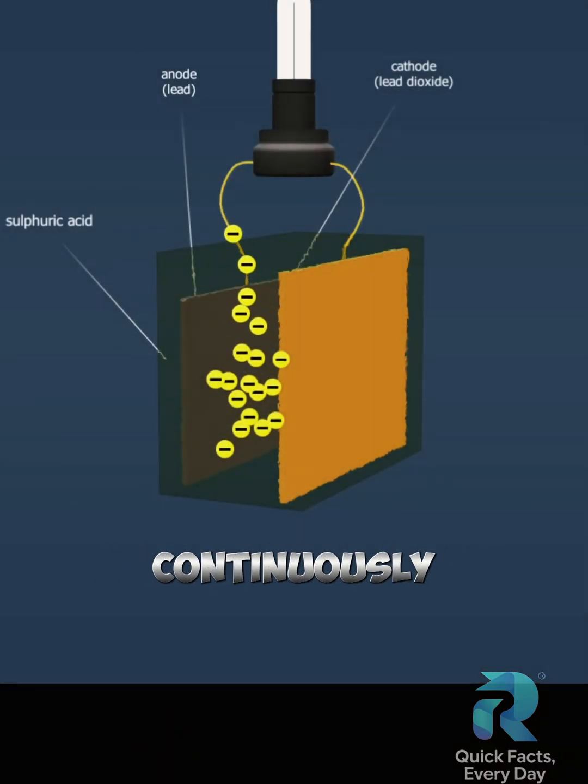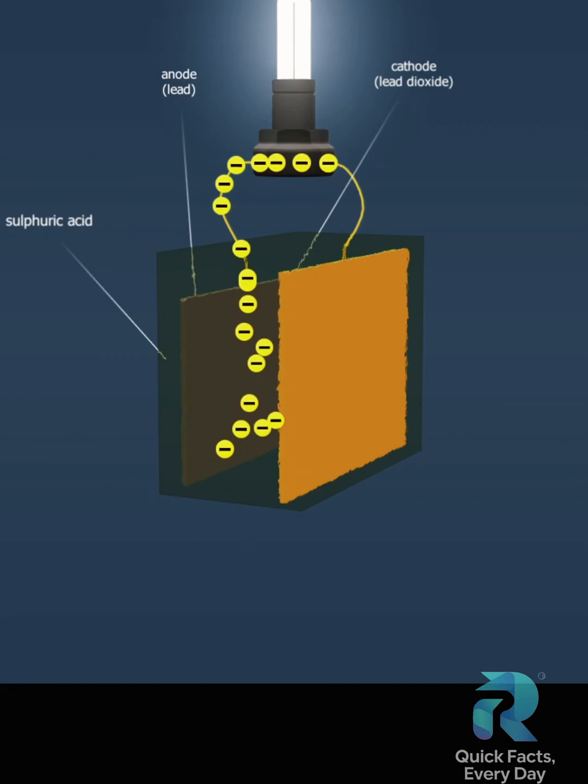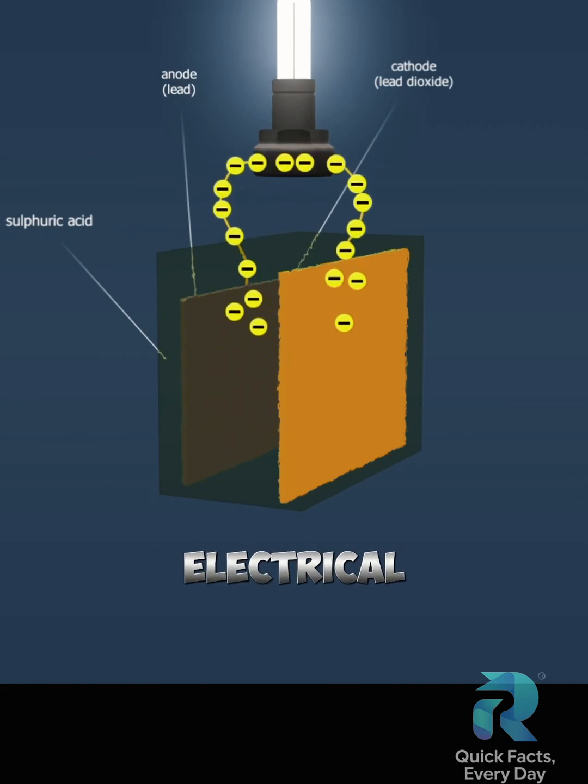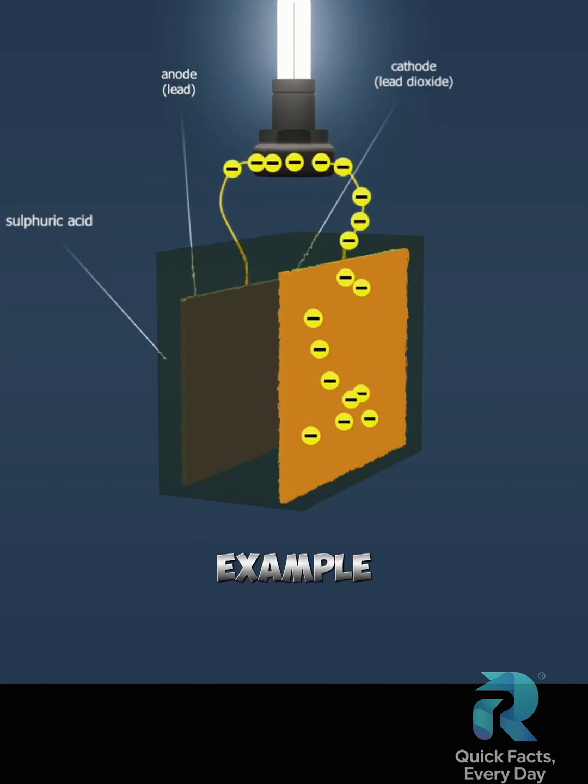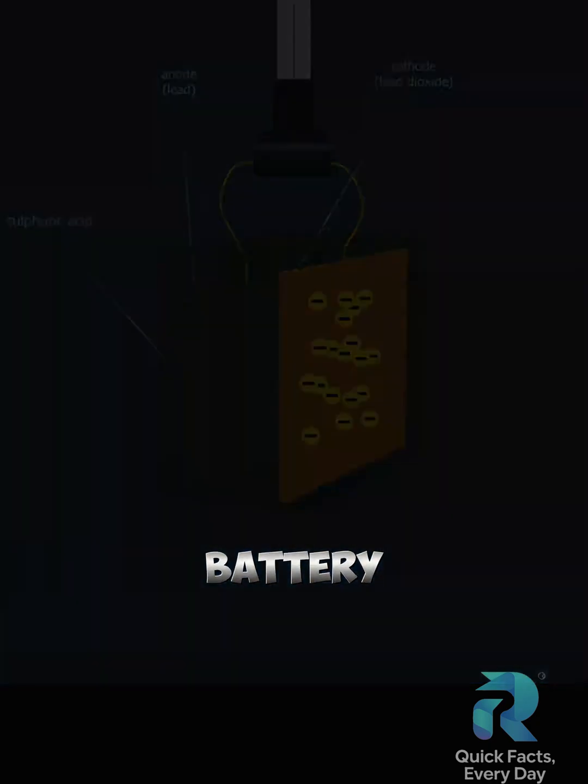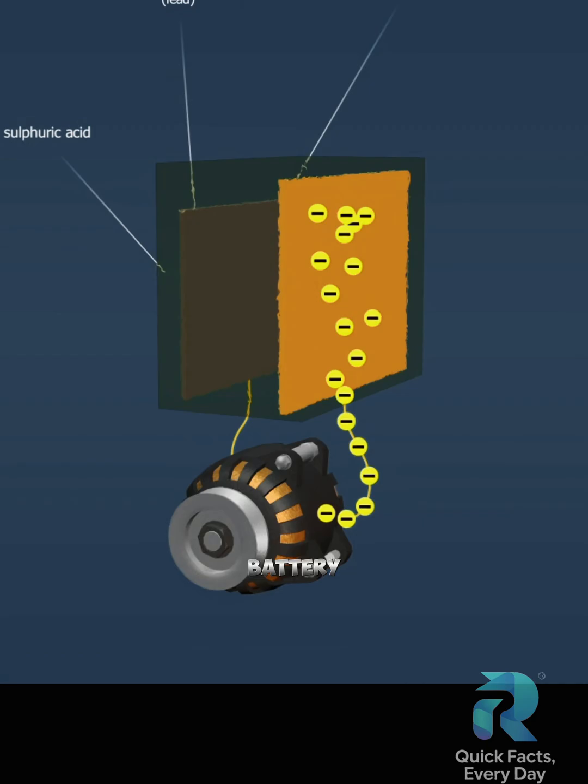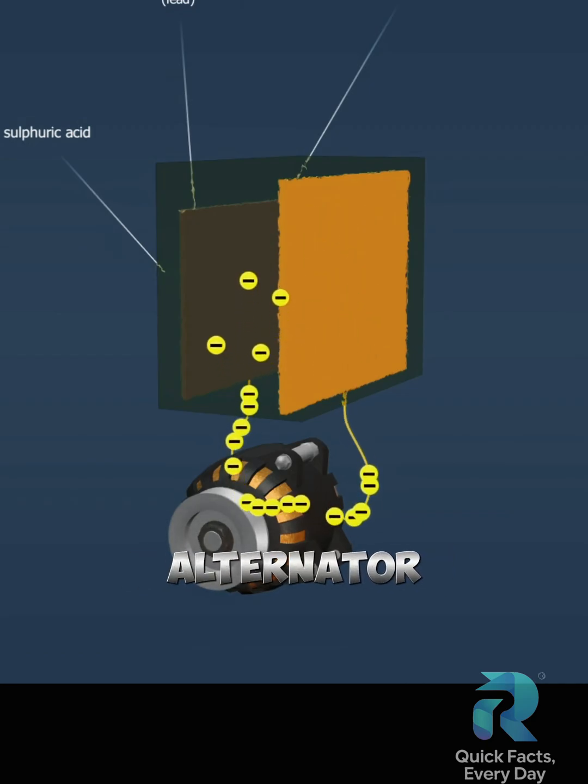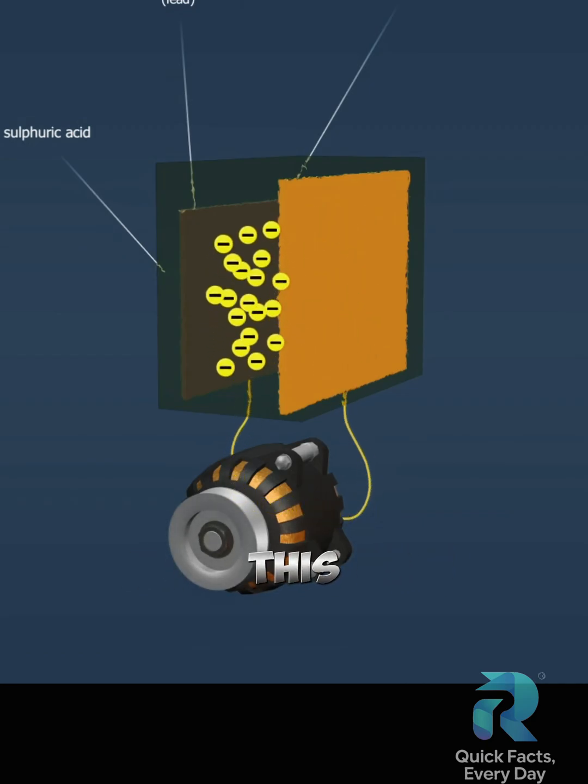A lead acid battery is continuously charged and discharged. When it is connected to an electrical load that requires electricity, for example, the starter in a car, current starts flowing from the battery. When no load is connected to the battery while driving, the alternator charges the battery. This process of discharge and charge means that energy can be discharged and restored again and again.